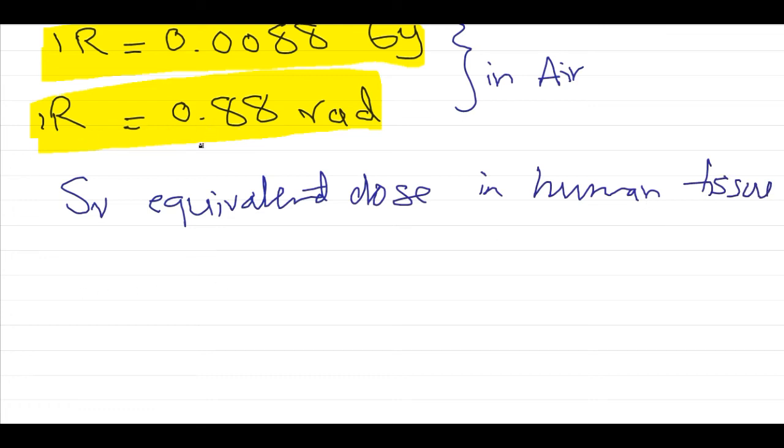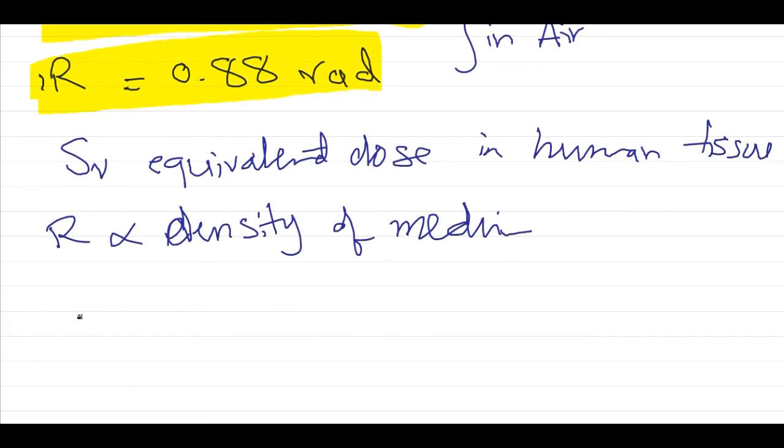We expect that this amount must be increased because Röntgen is proportional to the density of the medium. Higher density means higher ionization.